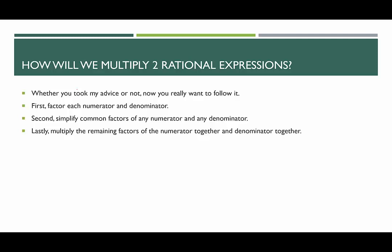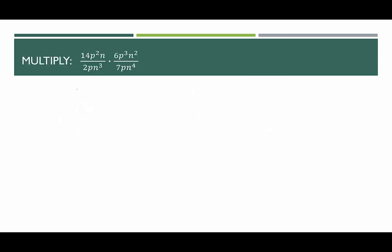You may want to check with your instructor whether you can leave factors factored or need to distribute and multiply. Let's look at an example with just monomials in the numerators and denominators. With variables you might want to combine like terms first. I have p² and p³ so I'll write 14 times 6 times p to the fifth, and n times n² gives n cubed. In the denominator I have 2 times 7, p times p is p squared, and n³ times n⁴ is n to the seventh.